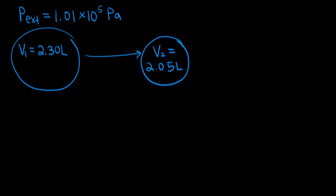In this video, we're going to do an example problem where we calculate internal energy and also calculate pressure volume work. So we know the external pressure is 1.01 times 10 to the fifth Pascal. And our system is some balloon, let's say it's a balloon of argon gas.